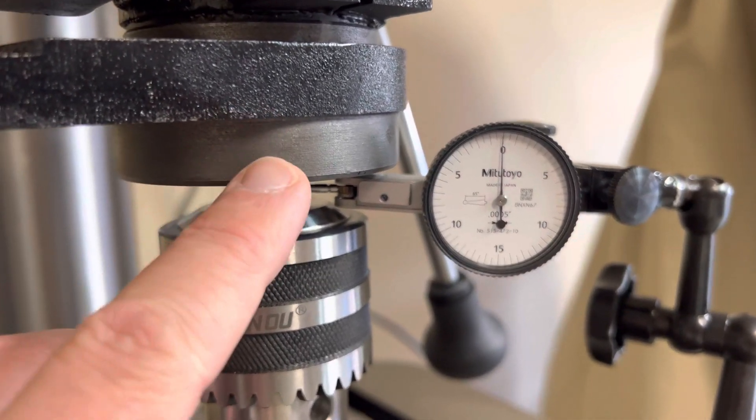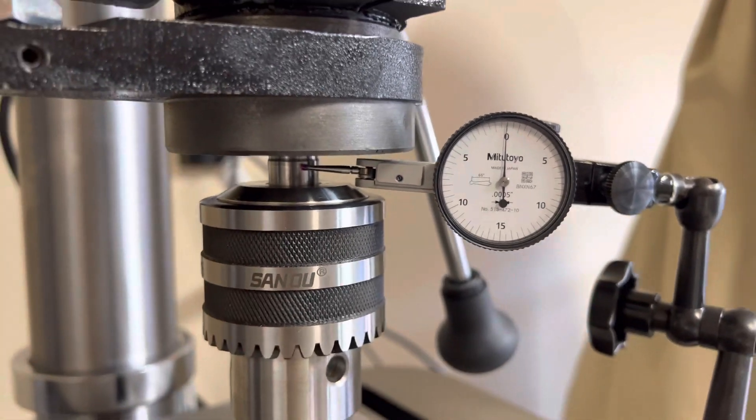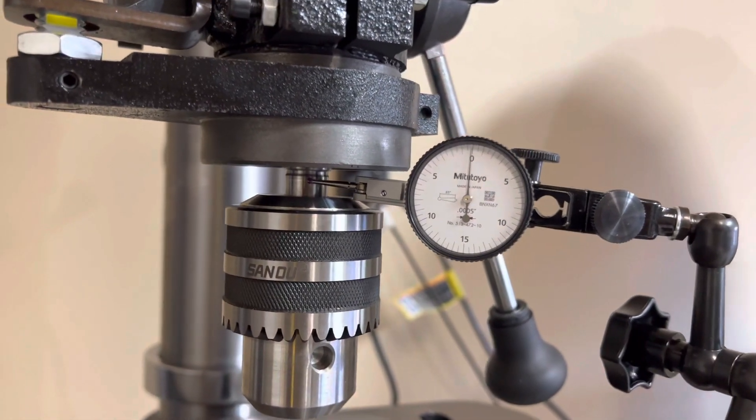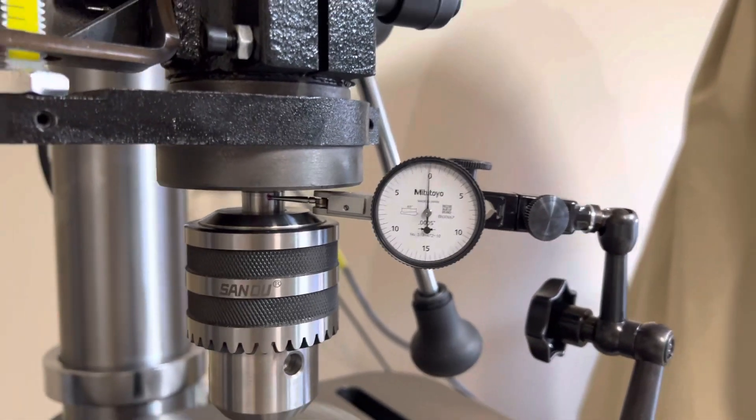I guess I could measure directly into the receiving portion of the quill. That probably would be more accurate to the drill, but here, look...